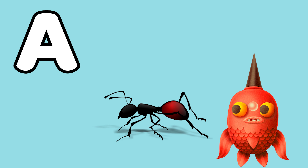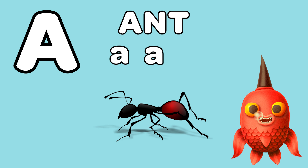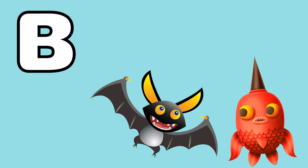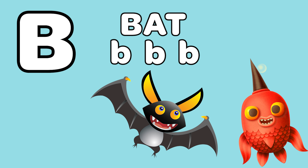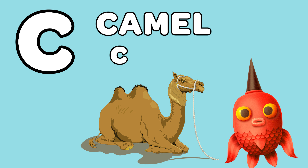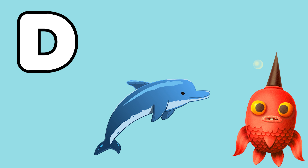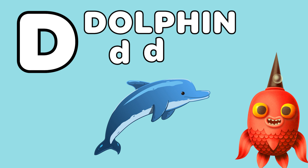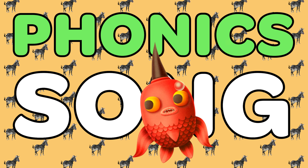A is for Ant, ant. B is for Bat, bat. C is for Camel, camel. D is for Dolphin, dolphin.